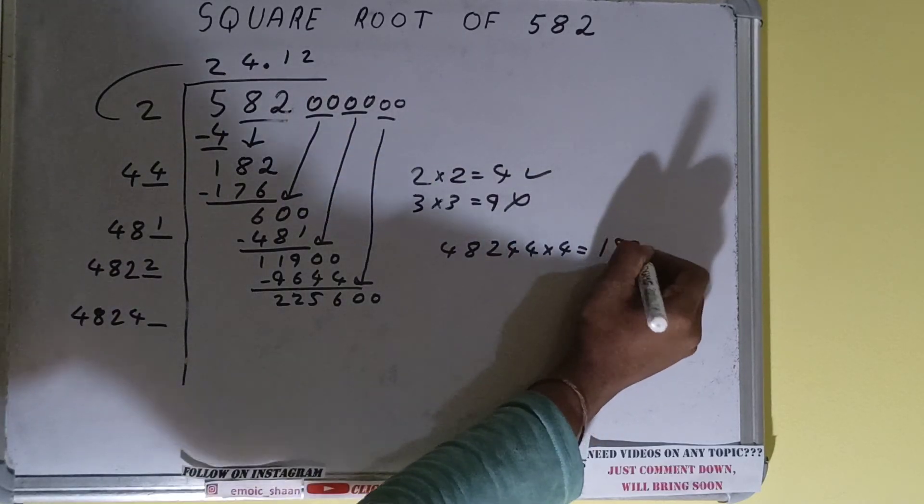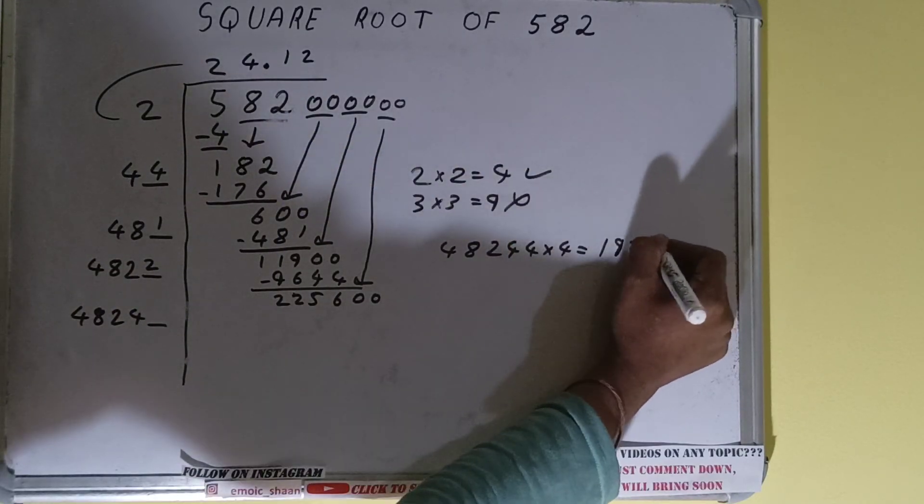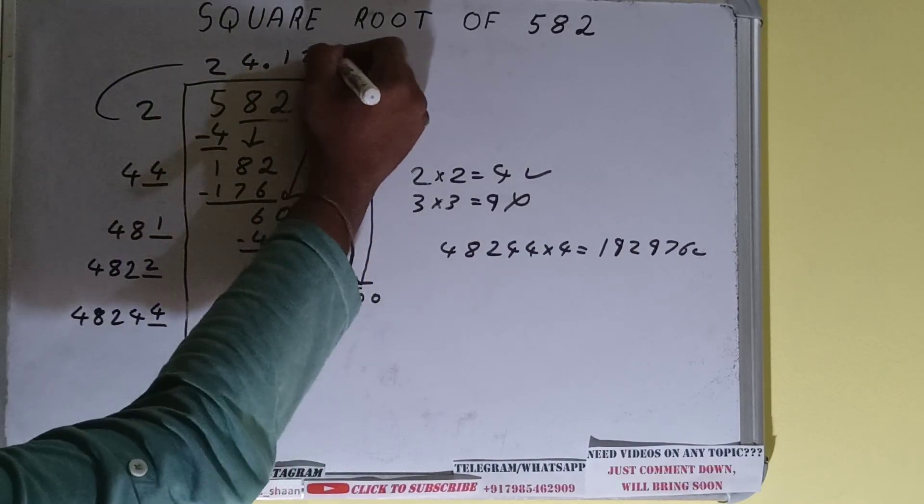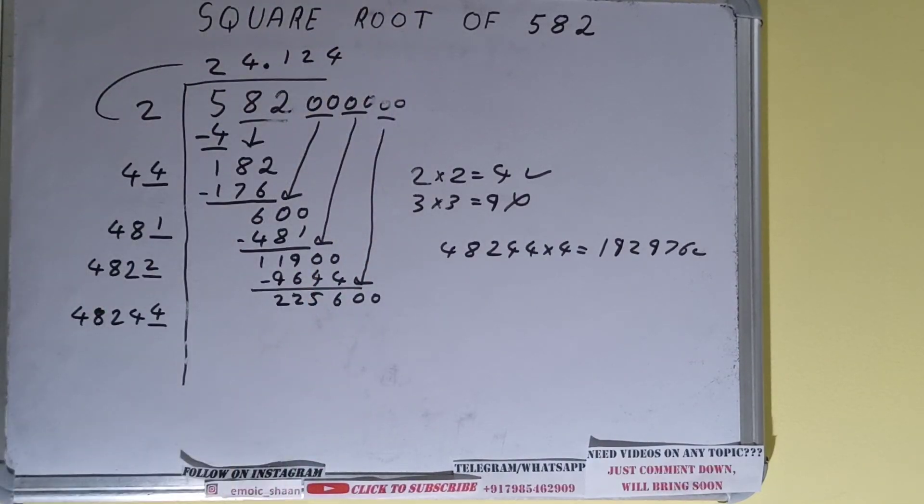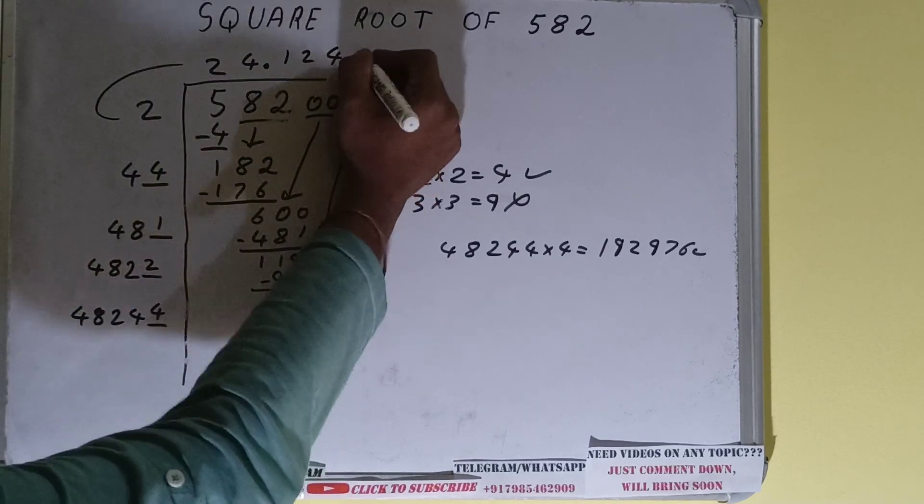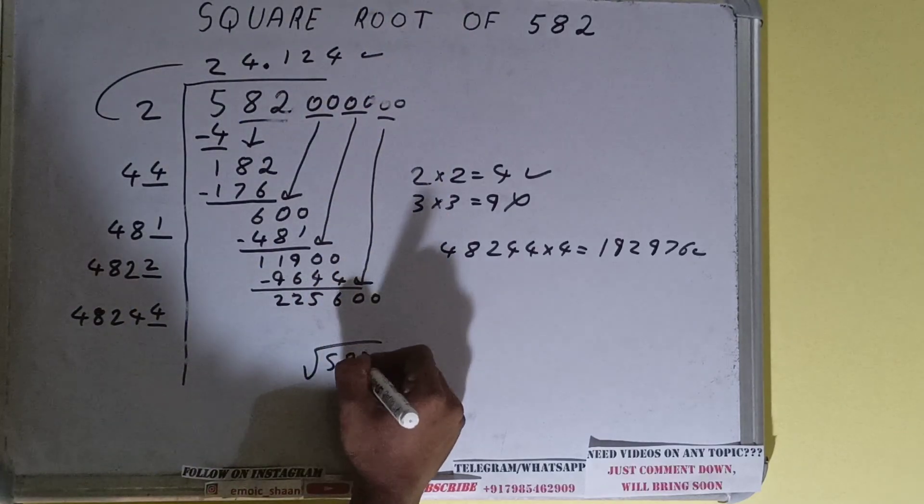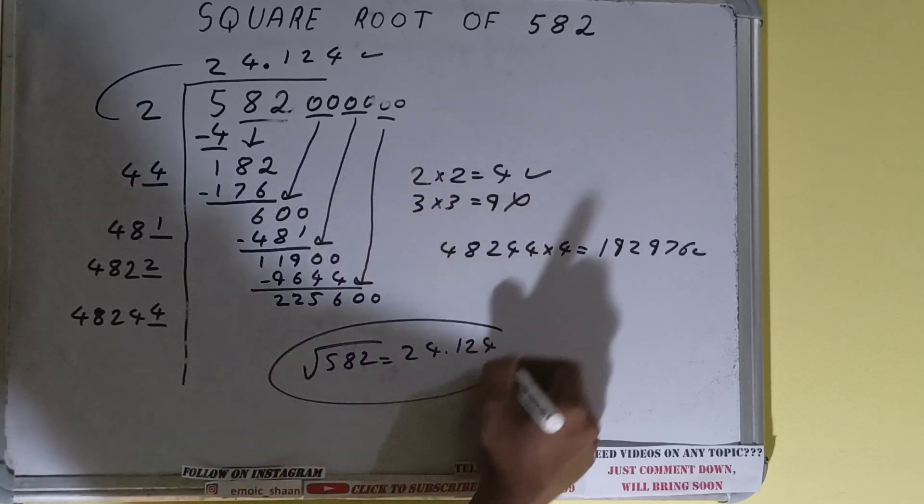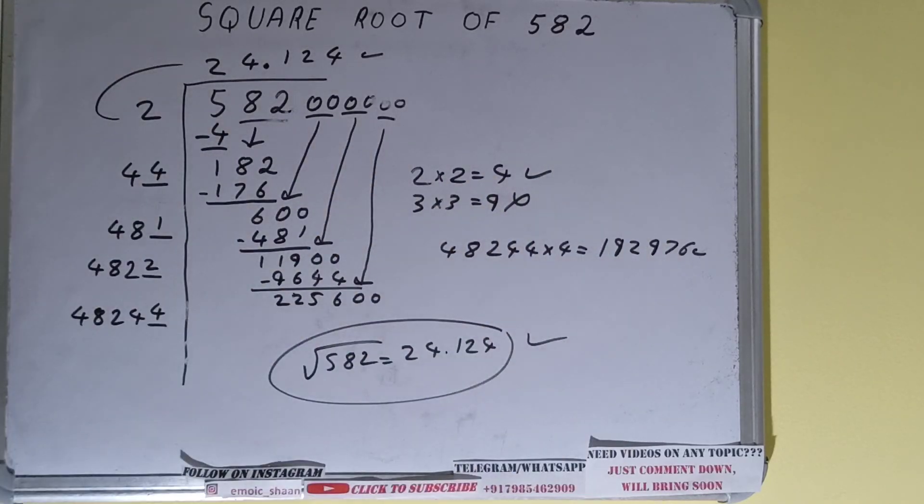It will be 192976. That is good to take. So 4 here and 4 here. But we don't need to calculate further because we got the answer up to three decimal places. The square root of 582 is 24.124 and that is the answer.